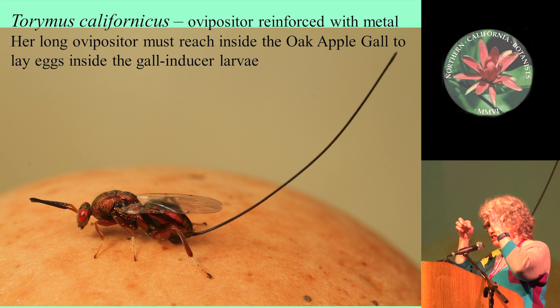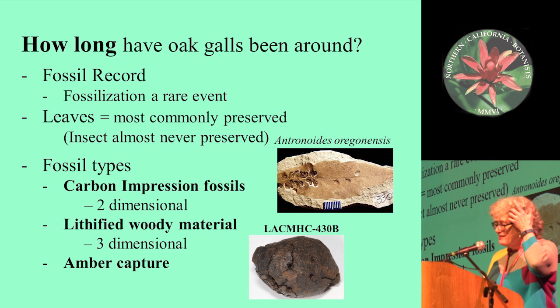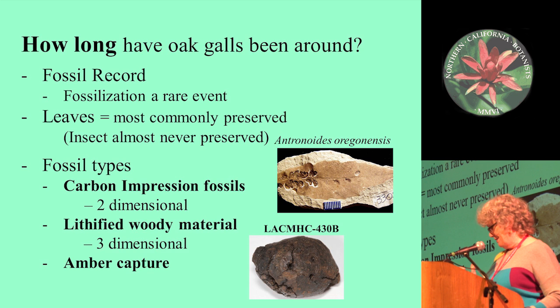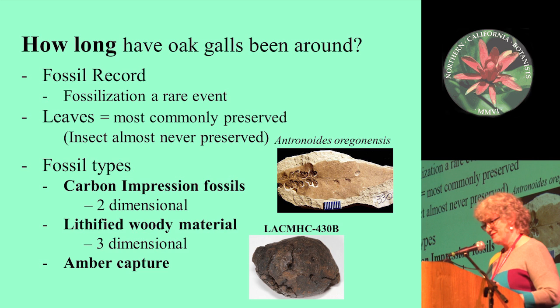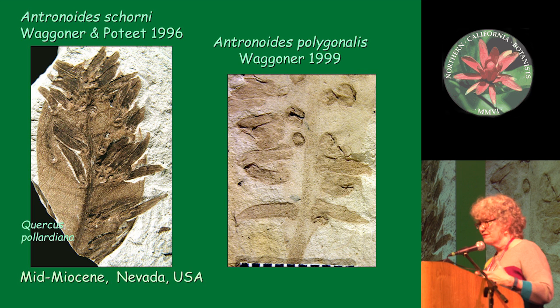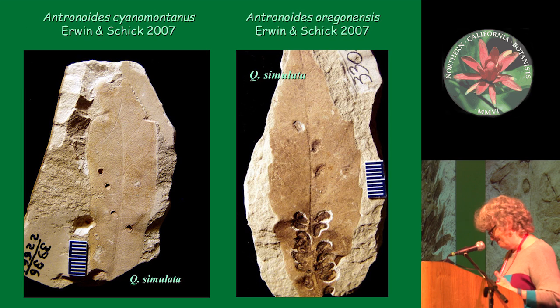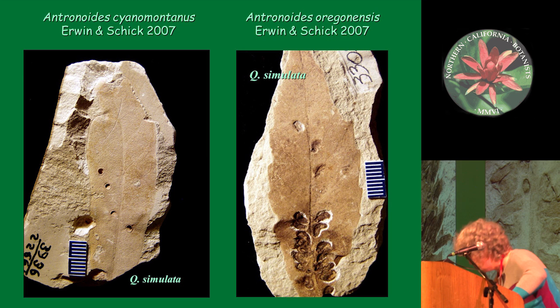How long have galls been around? We turn to the fossil record for that. Mostly it's leaves preserved, and mostly these are carbon impression galls. We have very little woody material, and virtually no amber galls until quite recently — and they're very recent material, nothing old. Here are some fossil galls from the mid-Miocene, all western — probably the ancestors of gall wasps and galls you see today. These are on fossil oaks, not currently residing here. More recently, we've described some new species from other fossil oaks. So they've been around a long time.